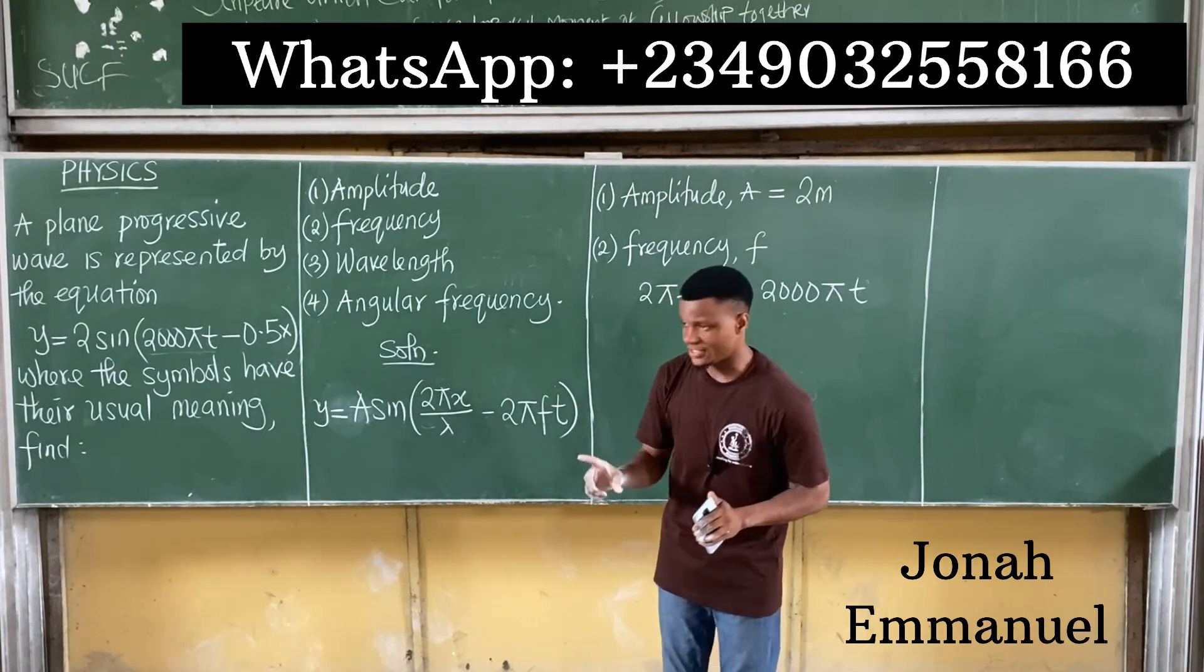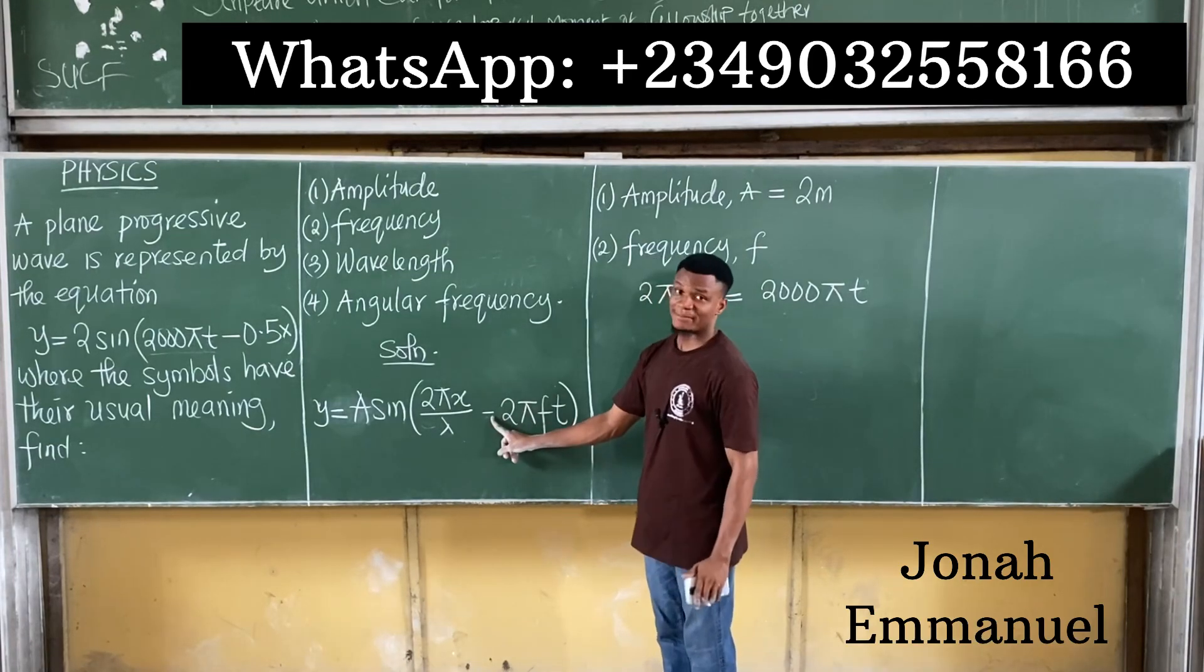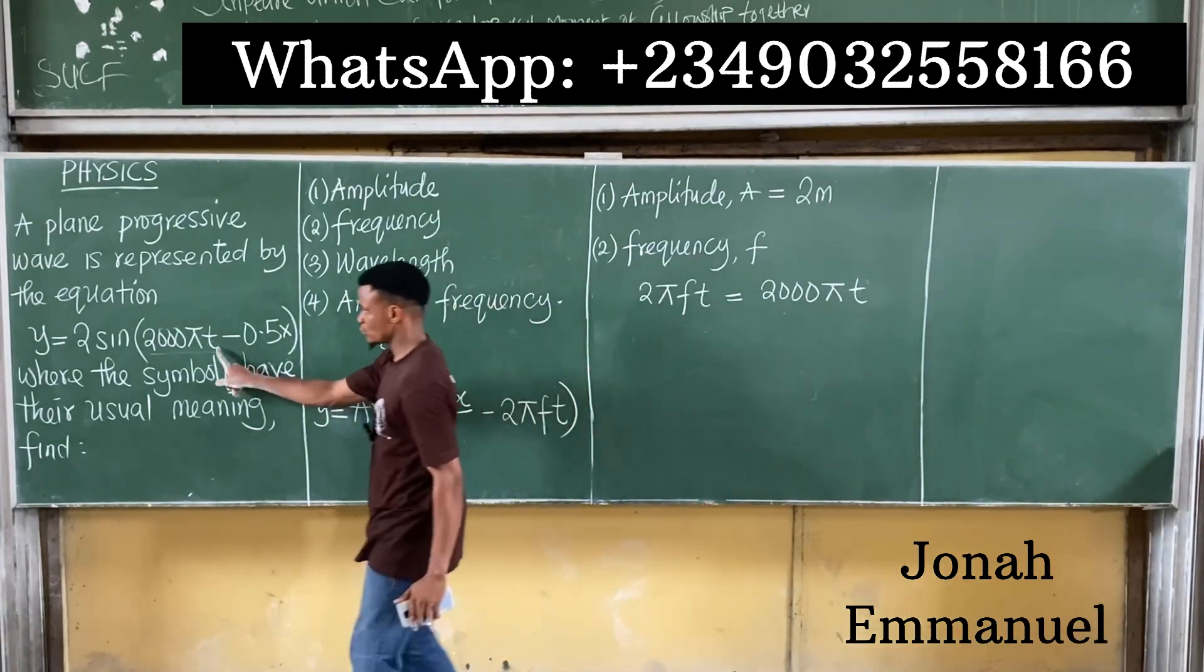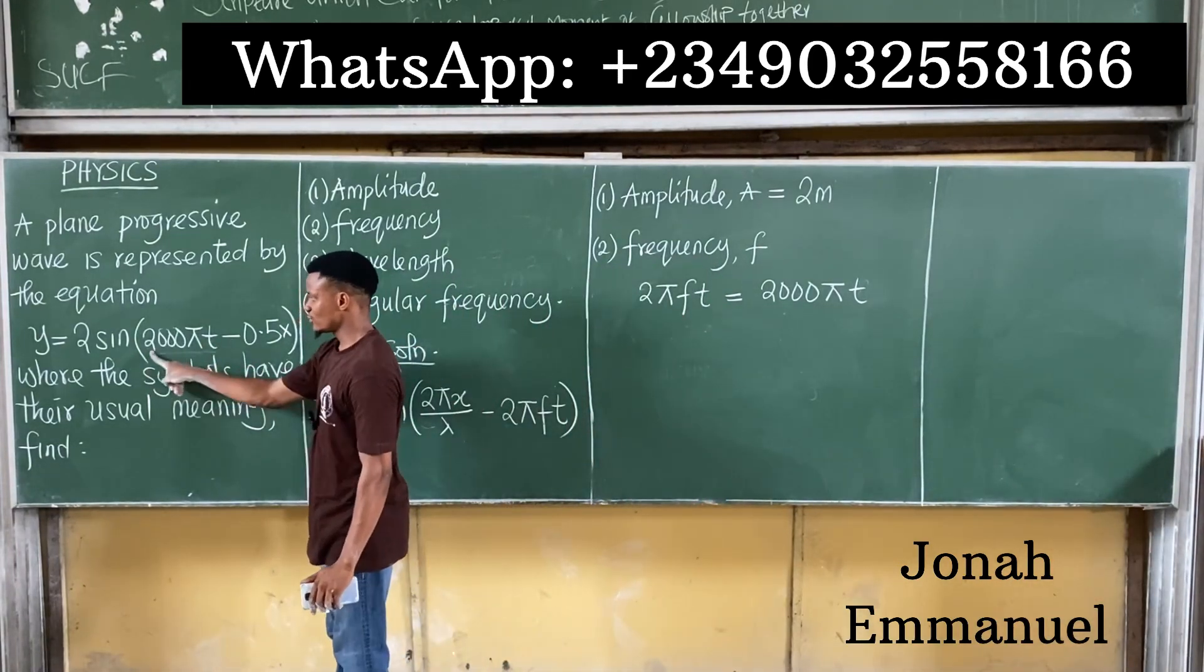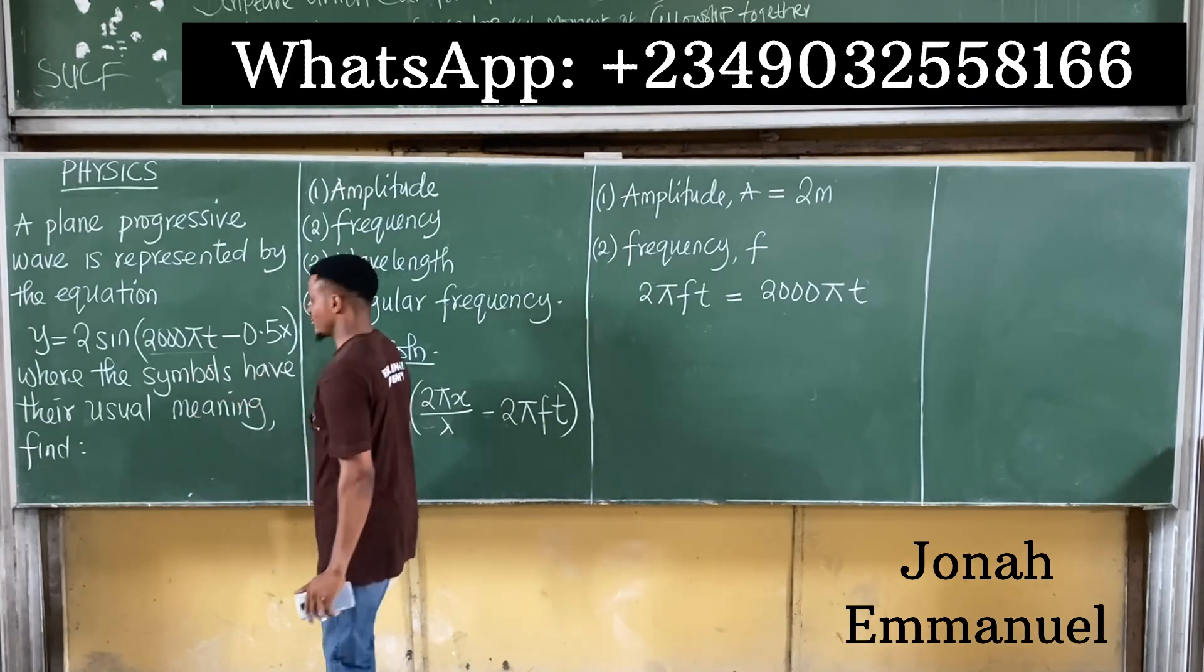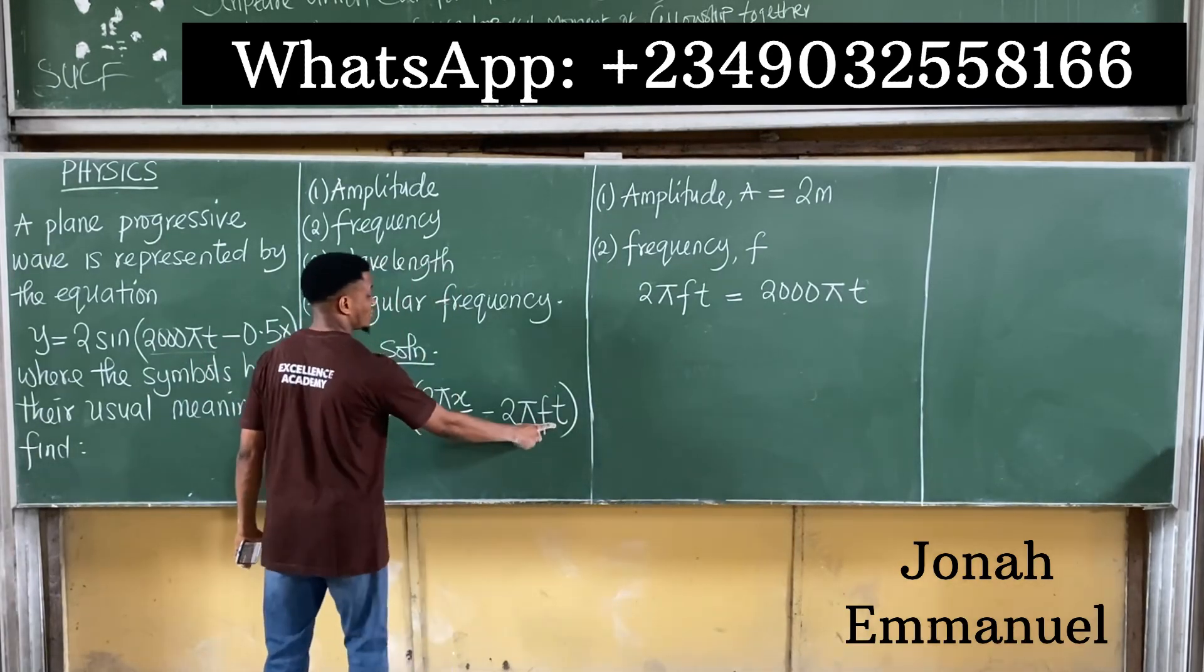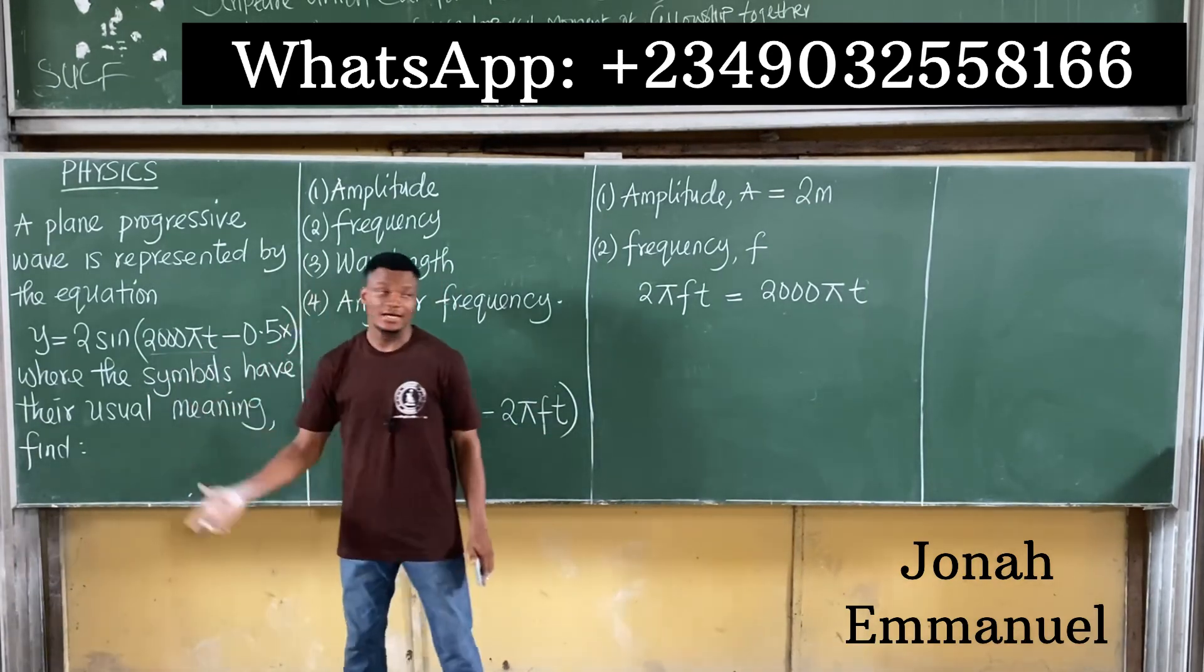But when it comes to this calculation here, ignore the minus sign. Just look for the one having t, which would be 2πft, ignoring the minus. Come to these two, the one having t is this one here, 2000πt, ignore the minus. So simply equate the term having t here to the term having t here.